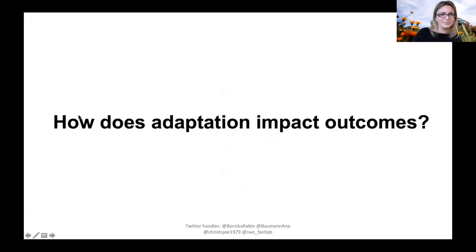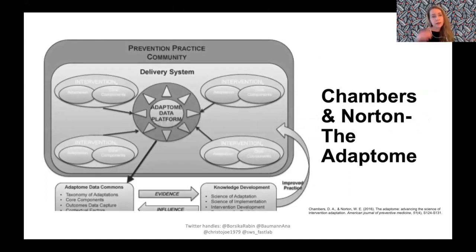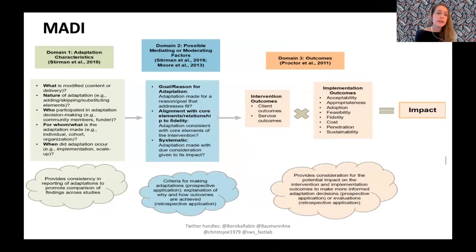Once we track adaptations carefully, there's potential for a repository of information about how different types of interventions have been adapted and what the outcomes are. By pooling information from different projects, we can start learning what types of adaptations can be effective in what context for which populations. The MADDIE framework has integrated the FRAME and added attention to using goals and reasons, alignment with fidelity, and whether adaptations were made systematically — as potential moderating or mediating factors to look at a variety of outcomes including intended and unintended consequences.